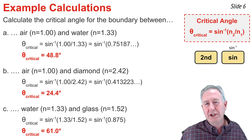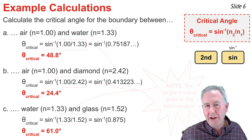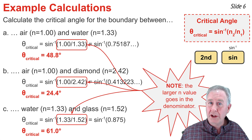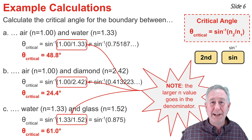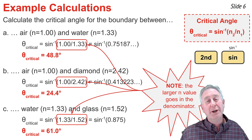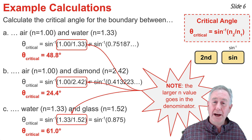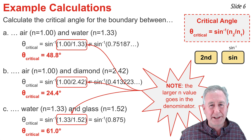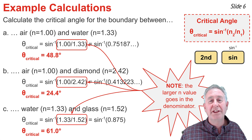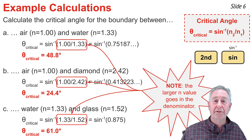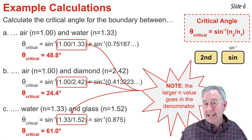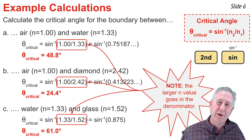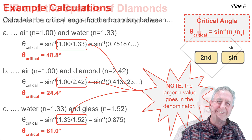In all three examples, I always put the smaller n value on top and the larger one on the bottom. If done the opposite way, you won't find an answer. This only occurs for light traveling from the material with the big index of refraction to the material with the small index of refraction.